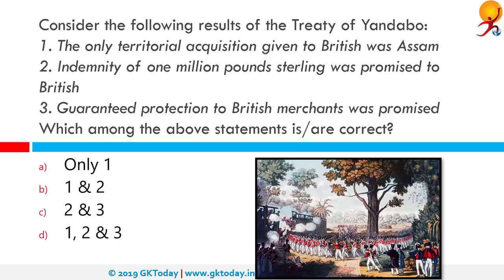Consider the following results of the Treaty of Yandabo: 1. The only territorial acquisition given to the British was Assam. 2. Indemnity of £1 million sterling was promised to the British. 3. Guaranteed protection to British merchants was promised. The Treaty of Yandabo was the peace treaty signed on 24th February 1826, ending the First Anglo-Burmese War, between General Sir Archibald Campbell and the Burmese Governor of Legaing. Statement 1 is incorrect — British got Manipur, Arakan and Tenasserim along with Assam. Statements 2 and 3 are both correct. So 2 and 3 are correct.